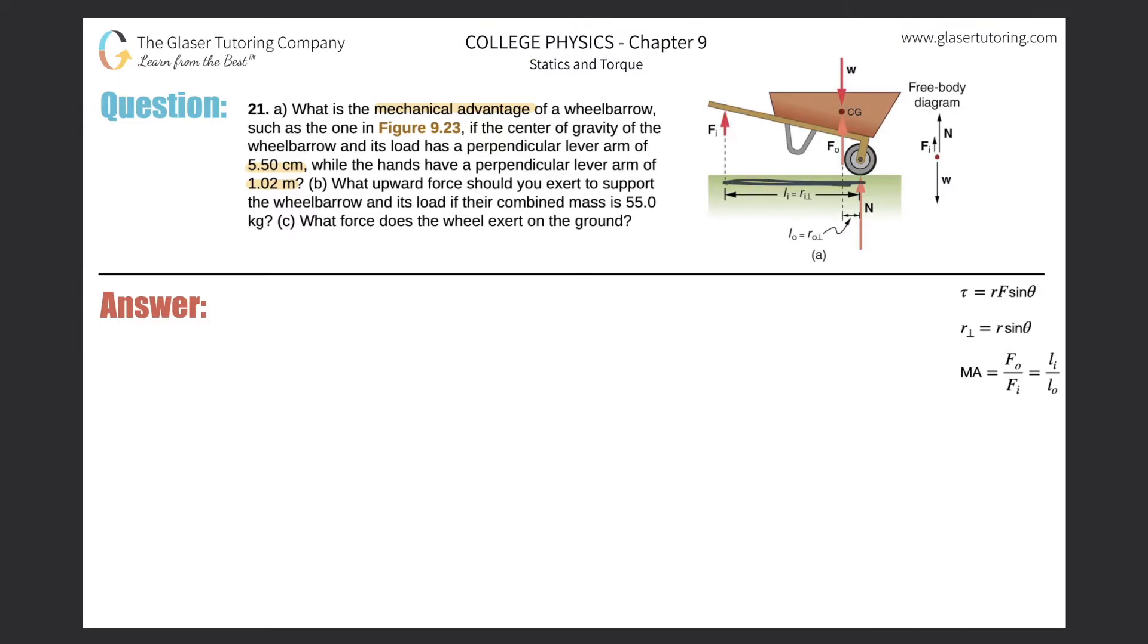So in thinking about solving for mechanical advantage, I have to use this formula over here on the right-hand side. MA is equal to the input lever arm over the output lever arm. So the input lever arm correlates with the input force, so the force that's being inputted is the force that your hands are exerting pulling this up.